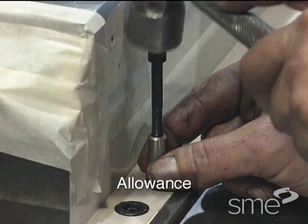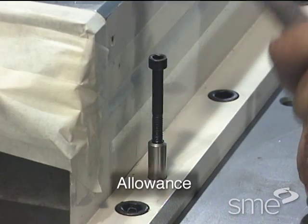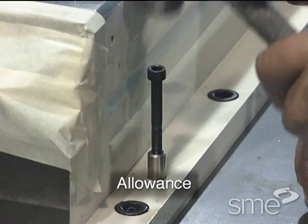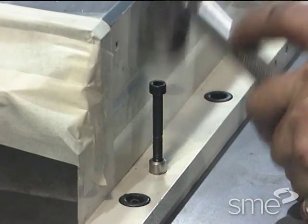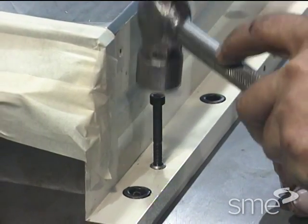Allowance is sometimes confused with tolerance. Allowance is the minimum clearance space intended between mating parts and represents the tightest permissible fit.